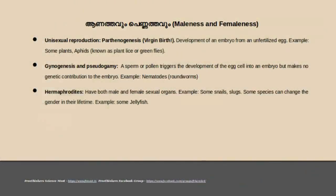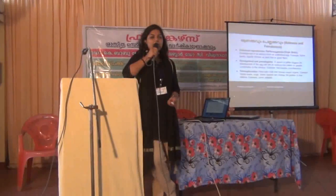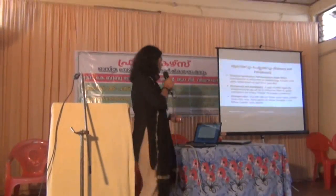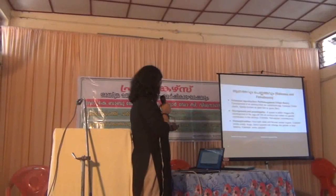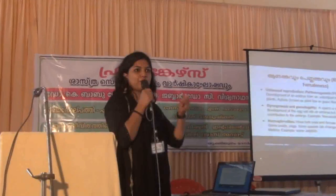Parthenogenesis is a virgin birth. An unfertilized egg develops into offspring — this is a gamete. It is a haploid cell. It is not a fertilized egg, yet it develops into an offspring. This is an example found in certain plants.